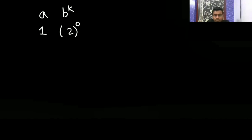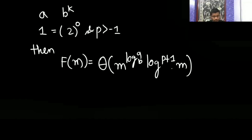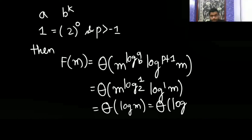Here k = 0, and a = 1. Since a = b^k, we apply the case: f(m) = Θ(m^(log_2 1) · log^(0+1) m) = Θ(m^0 · log m) = Θ(log m). Now substituting back, since m = log n base 2, the final answer is Θ(log log n base 2).